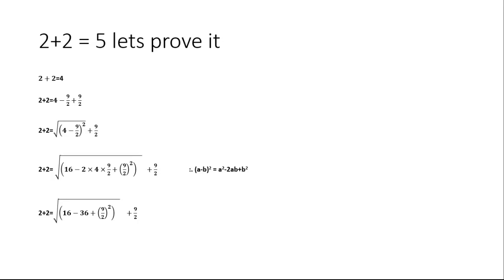4s are 36, which shall become 16 minus 36 plus (9/2)² whole square. Now add 16 and minus 36, which will be equal to minus 20 plus (9/2)² whole and root plus 9/2.